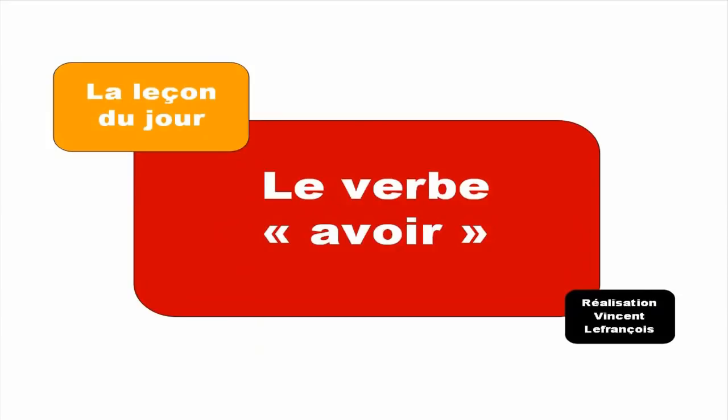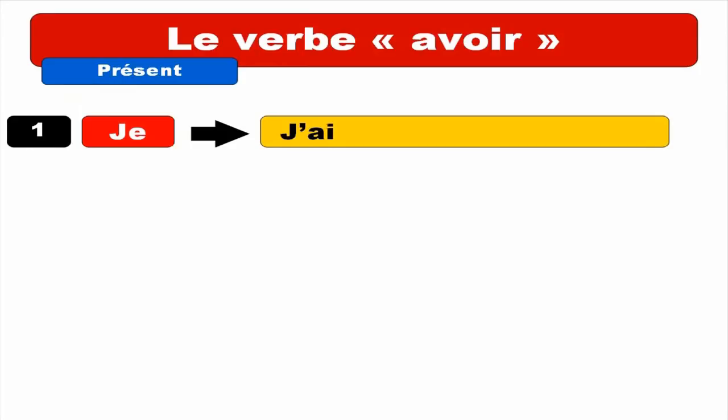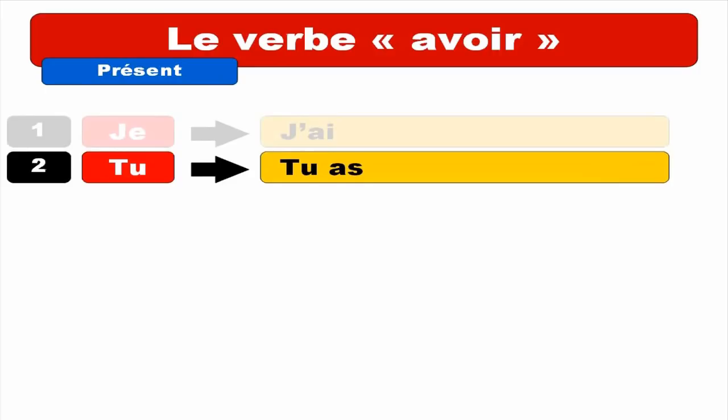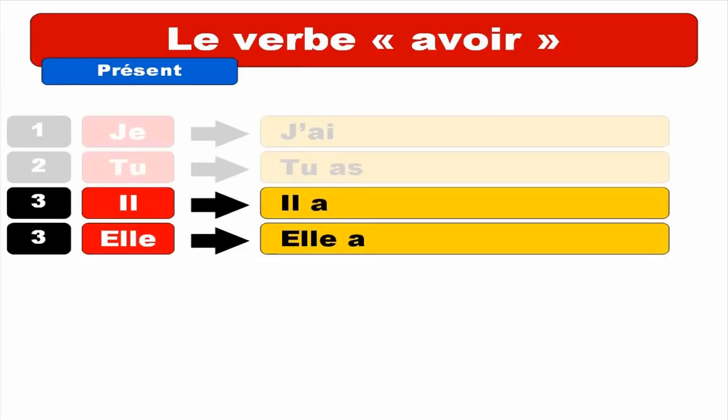First form for JE is J'AI. Repeat. J'AI. Second form for TU — TU AS. Repeat. TU AS. Third form, IL and ELLE, so masculine — IL A. Repeat. IL A.